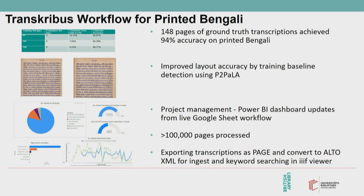For the majority of books, layout analysis was very good and baseline detection was excellent. But for about 200 books it was not — it was drawing multiple baselines. We trained a P2Pala model on just baselines, and that vastly improved accuracy on those problematic books. From a project management perspective, we were a team working remotely in India and the UK. We managed the workflow using a Google Sheet tracking each book's status through the Transkribus pipeline, linked to a Power BI dashboard that updated in real time, giving us a visual snapshot of progress — including how many books needed layout correction and forecasting how much longer the work would take.